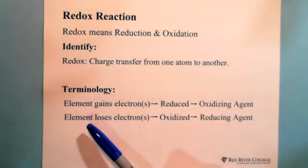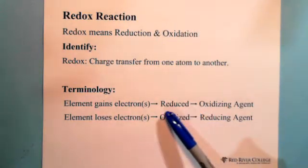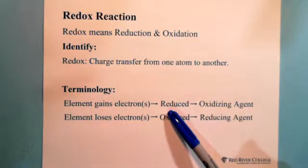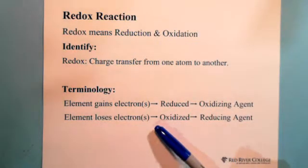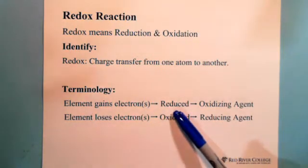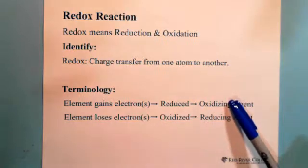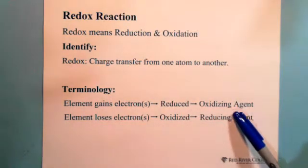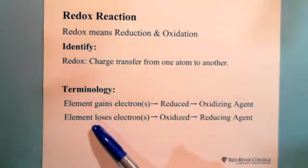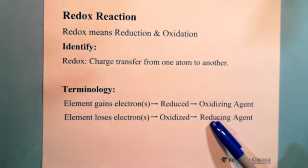For example, if an element gains electrons, itself is reduced. But where do the electrons come from? From another element — the other element is losing electrons, so the other element is oxidized. This element, by gaining electrons and causing another to lose electrons, acts as an oxidizing agent. And the element that loses electrons — those electrons go to another element, making it gain electrons — is the reducing agent.